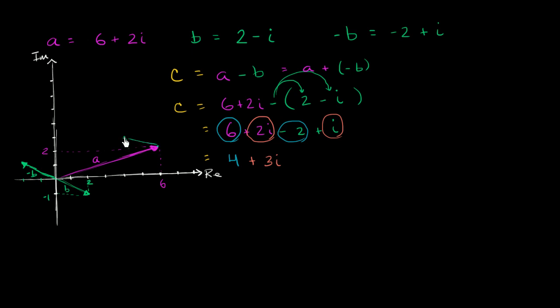So this vector is another way to visualize negative B as a vector. And so where our new head is, once we put the tail of negative B here, is going to be the head of our vector C. So C is going to be this vector right over here. And we see that is four plus three i. We see that right over there.